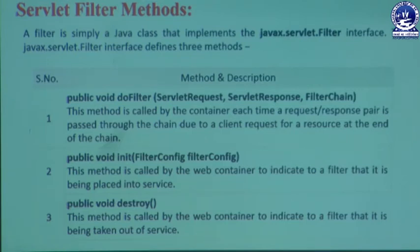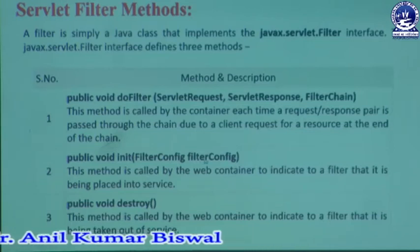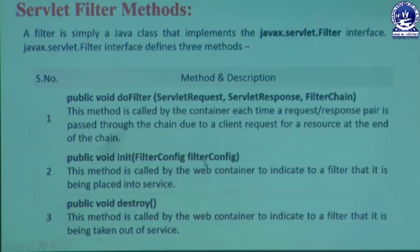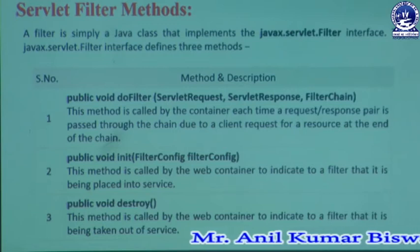Another method is the init() method — the initialization method. It contains a parameter of type FilterConfig, where FilterConfig is a predefined class with capital F and C, and the object is named 'config' in lowercase. This method is called by the web container to indicate that a filter is being placed into service. It helps initialize default parameters or values at the time of execution of a JSP page.